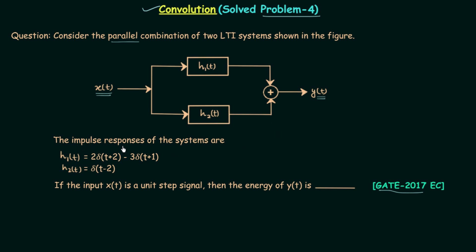The impulse responses of the systems are already given. H1(t) is equal to 2·δ(t+2) minus 3·δ(t+1), and H2(t) is equal to δ(t−2). In the problem it is given that if the input x(t) is a unit step signal, then we are required to calculate the total energy of y(t).